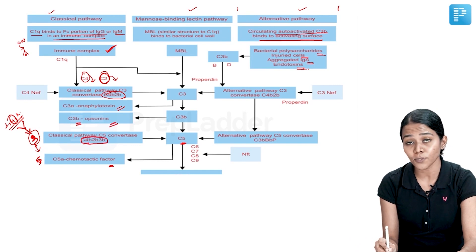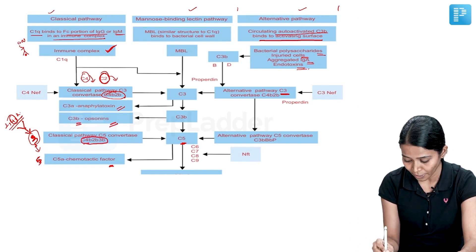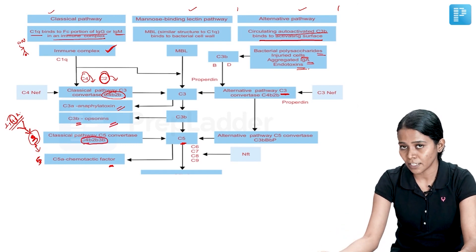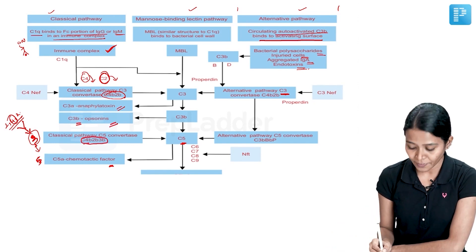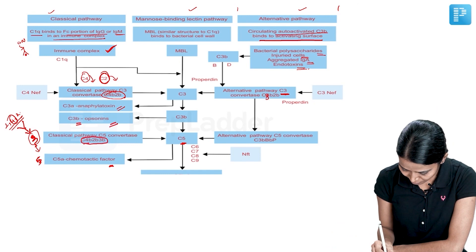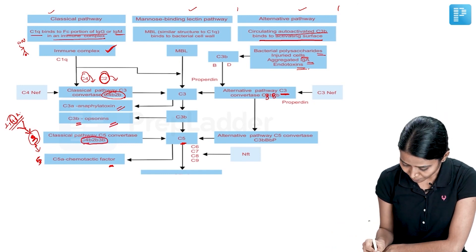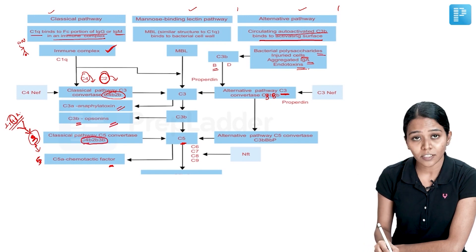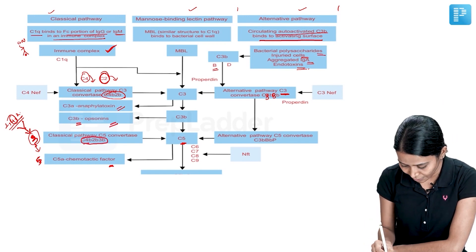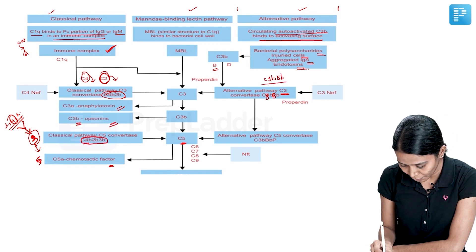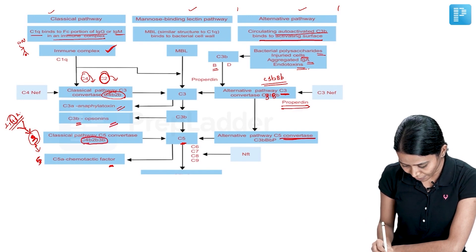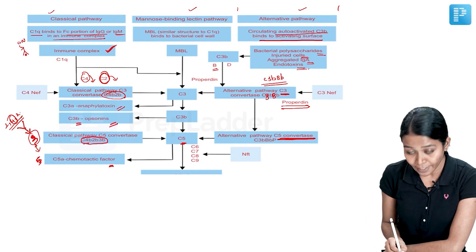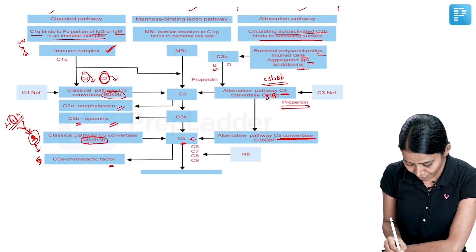So circulating auto-activated C3 binds to activating surface. Once this happens, it forms alternative pathway C3 convertase. We know that there was a classical pathway C3 convertase, which is C4B. So there is a factor B here. So the C3B binds to that and forms C3B and BB. This is alternative pathway C3 convertase. When acted upon by properdin, it forms the C5 convertase. This C5 convertase goes and attacks the C5B and it leads to formation of C5B which later forms a membrane attack complex.